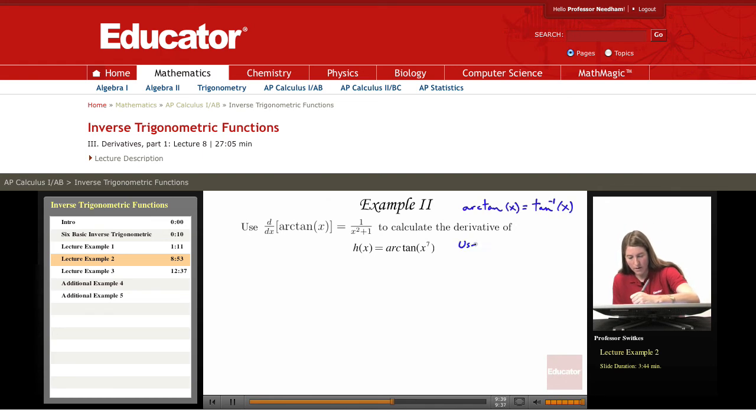I'll write down the statement of the chain rule for reference. The chain rule says that if we want to differentiate f of g of x, we get f'(g(x)) times g'(x). So we should identify our outer and inner functions to get started with the chain rule.